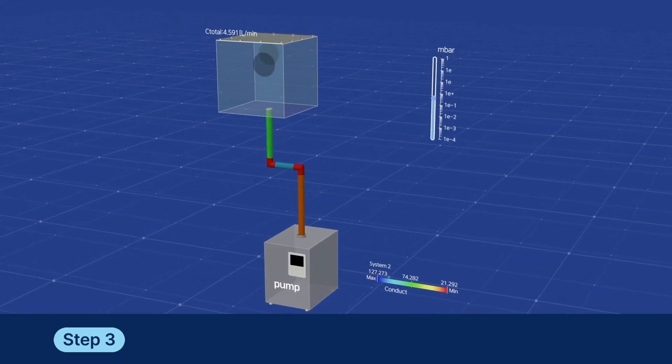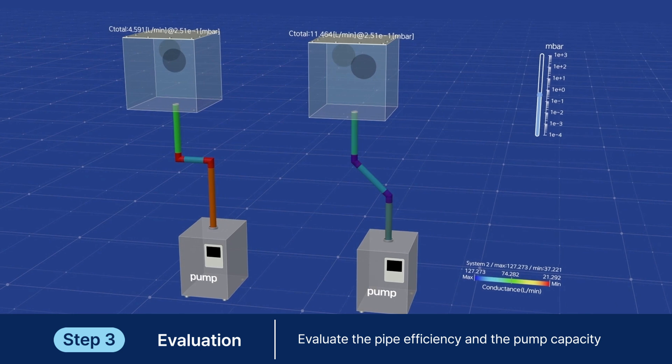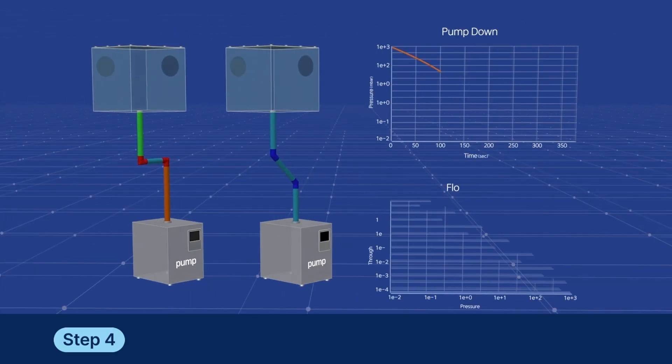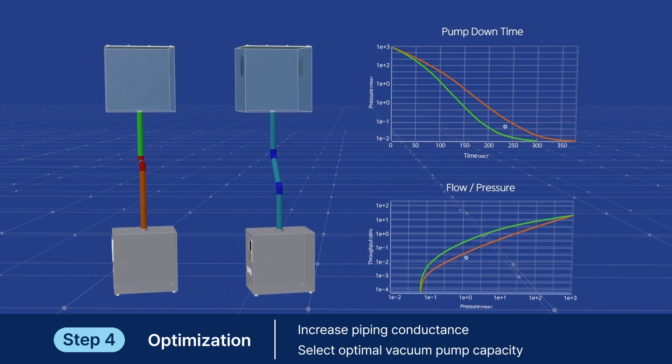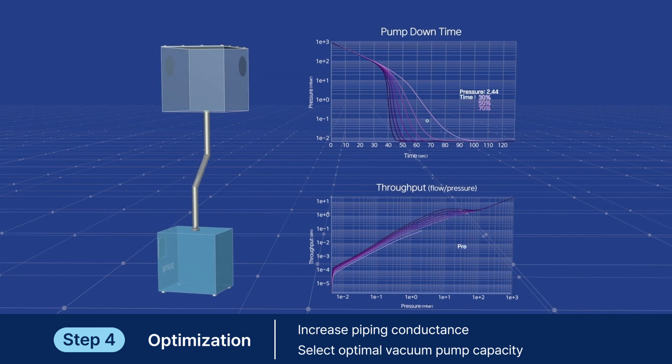This gives you ideas of which pipes need improvement and what is the optimal pump capacity. Based on the results, you can optimize the system by improving piping conductance and selecting the appropriate pump capacity.